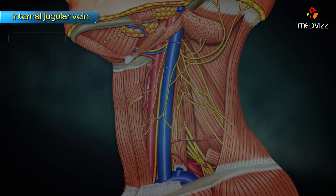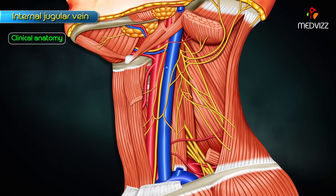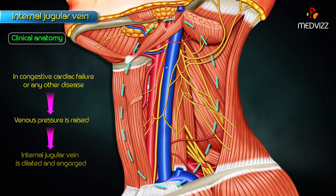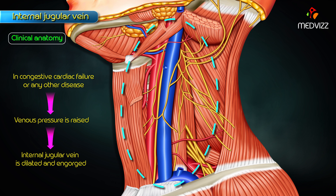Regarding clinical anatomy, in conditions like congestive cardiac failure or any other disease where venous pressure is gradually increased, the internal jugular vein is markedly dilated and engorged.